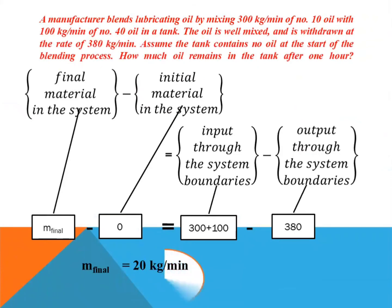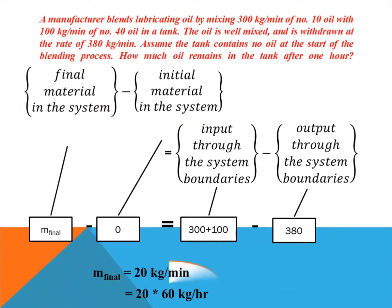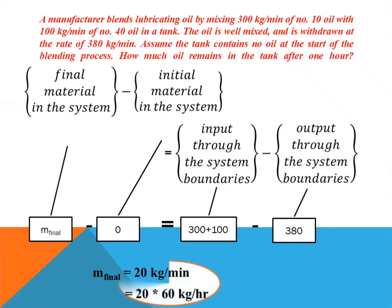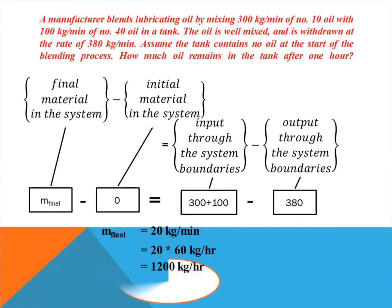After putting these values, we get M_final equals 20 kg per minute. We have to calculate how much oil remains in the tank after 1 hour. In 1 minute we have 20 kg, so in 1 hour — that is, 60 minutes — we have 20 multiplied by 60 kg. Therefore, 1200 kg of oil remains in the tank after 1 hour.